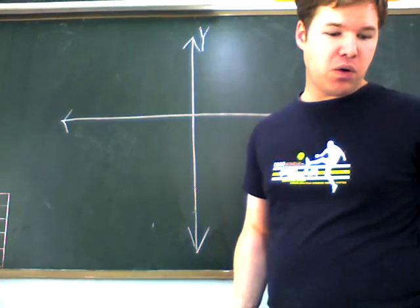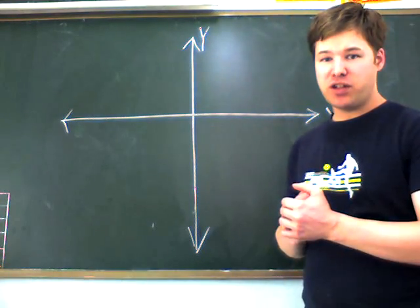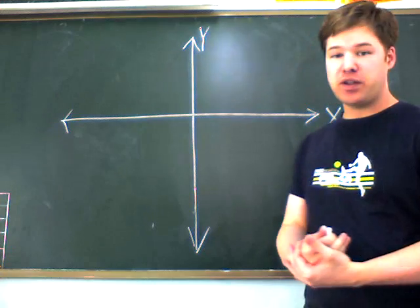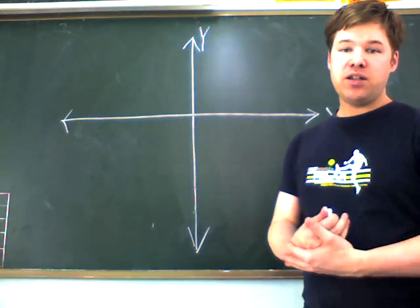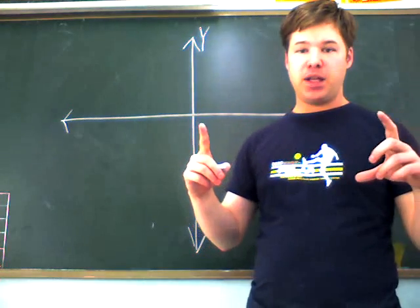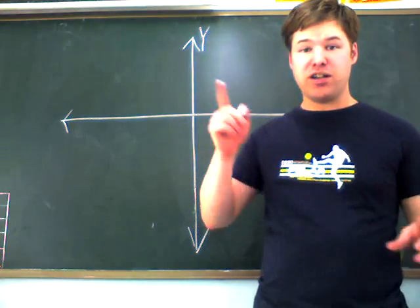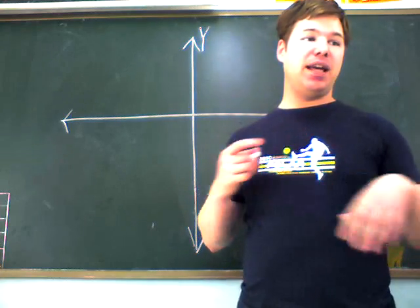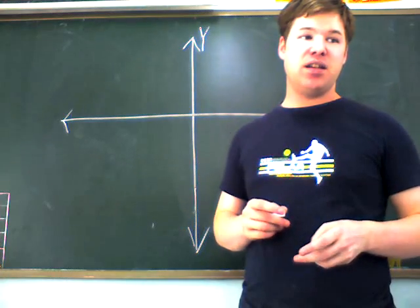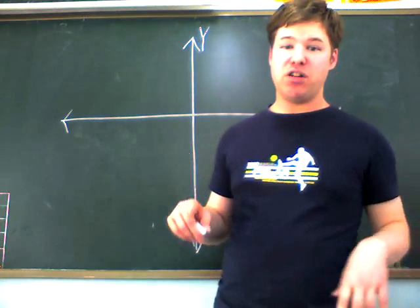So the first thing we need to understand about how a Stargate works, or the address system actually, we need to imagine that the ring, the ring device actually, it is circular. However, it is not, you know, everything's not what it seems. So it's not actually a circle.